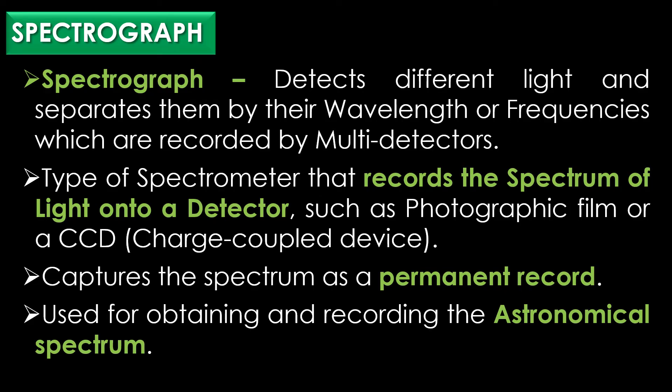Unlike a spectroscope, which is designed for visual observation, a spectrograph captures the spectrum as a permanent record. Spectrographs are most commonly used for obtaining and recording the astronomical spectrum.